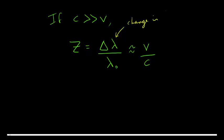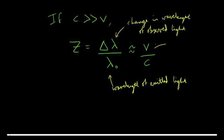Where lambda is the wavelength of the observed light, and lambda zero is the wavelength of emitted light, and V is the relative velocity of the light source, and of course, C is the speed of light in a vacuum.